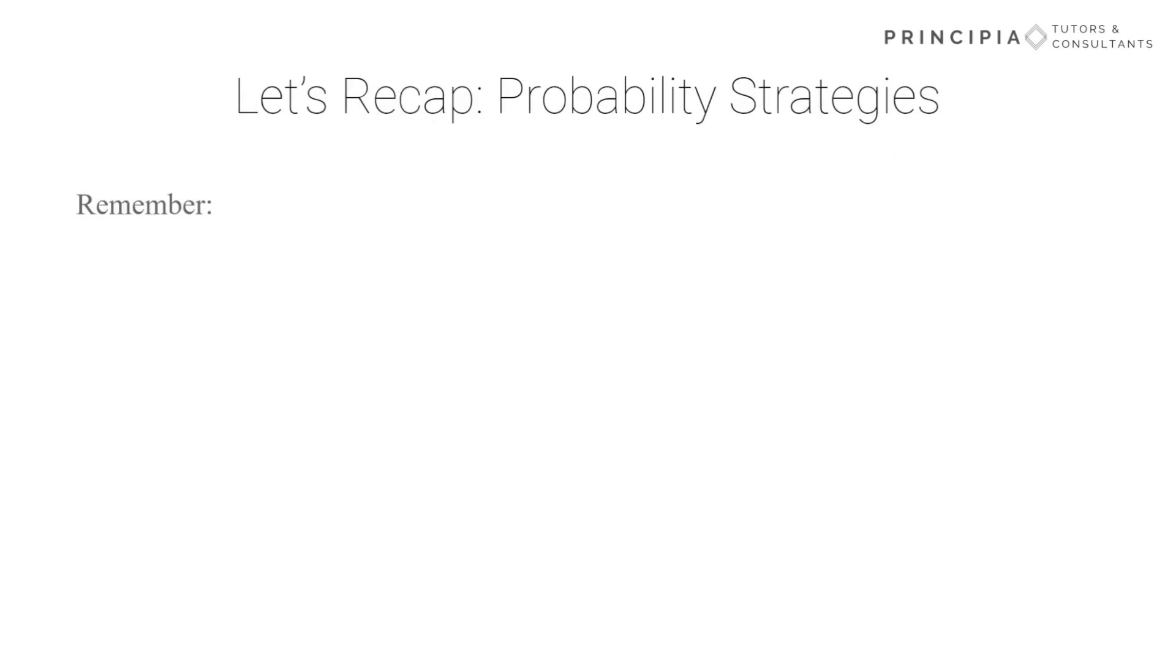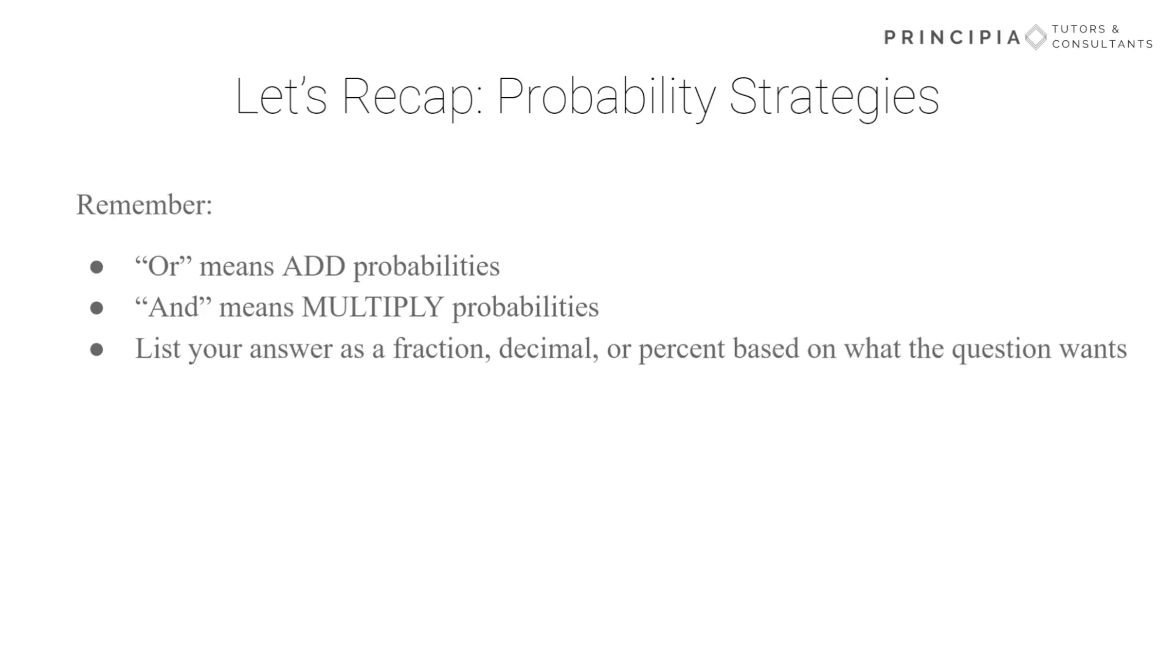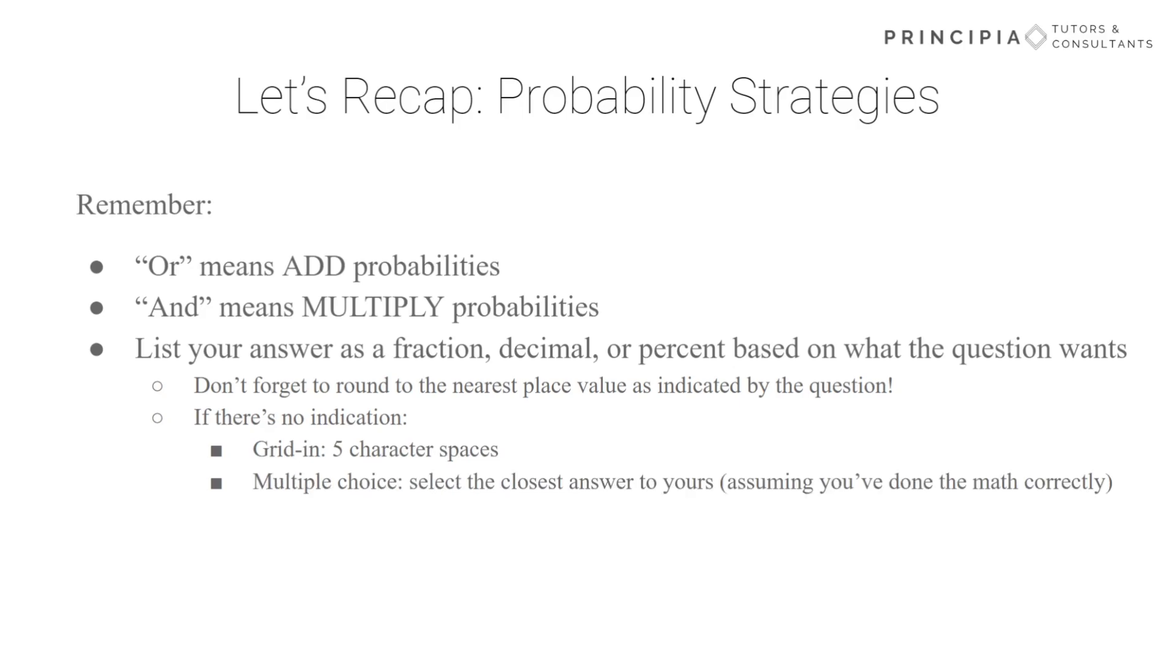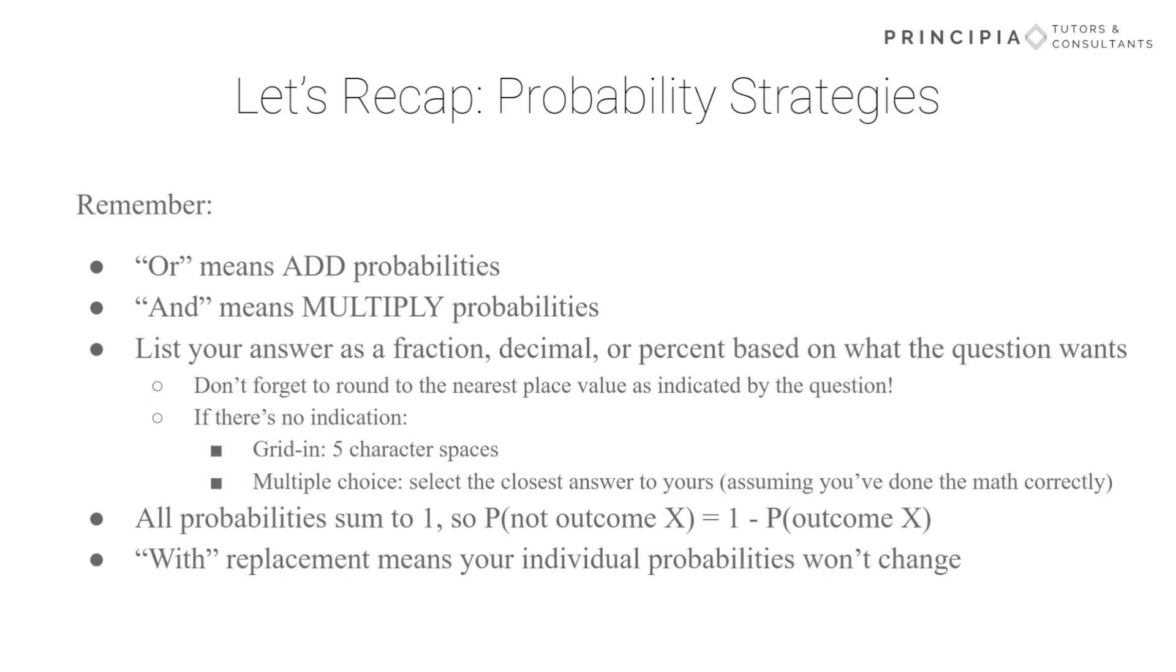All right, we'll do a quick recap of our strategies. So remember, 'or' means you add probabilities and 'and' means you multiply them. Remember to list your answer as a fraction, decimal, or percent based on what the question wants. Do what it tells you to get the point. Don't forget to round to the nearest place value as indicated. If there's no indication for grid ends, you have five character spaces. For multiple choice, you'll want to select the answer choice that is either closest to yours or maybe a reduced version of yours. Assuming you've done the math correctly, that should work. Just be sure to organize your steps so you can check yourself quickly. Remember, all probabilities sum to one. The probability of not outcome X is just one minus the probability of outcome X. With replacement means your individual probabilities won't change. Without means your probabilities will change every time.